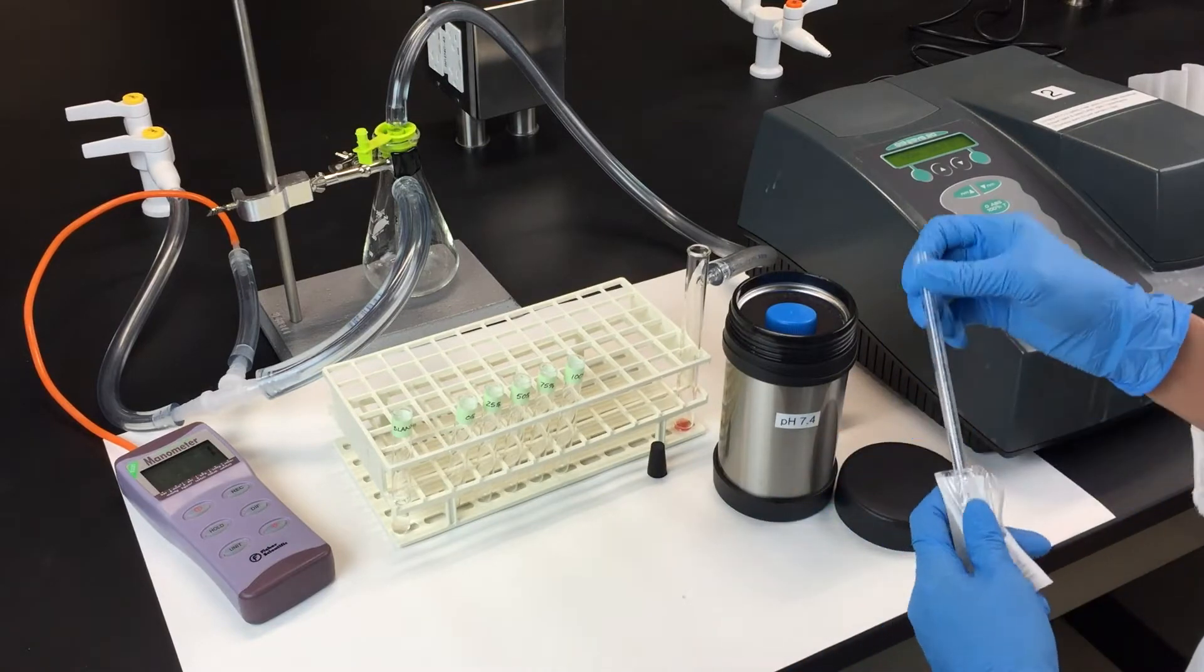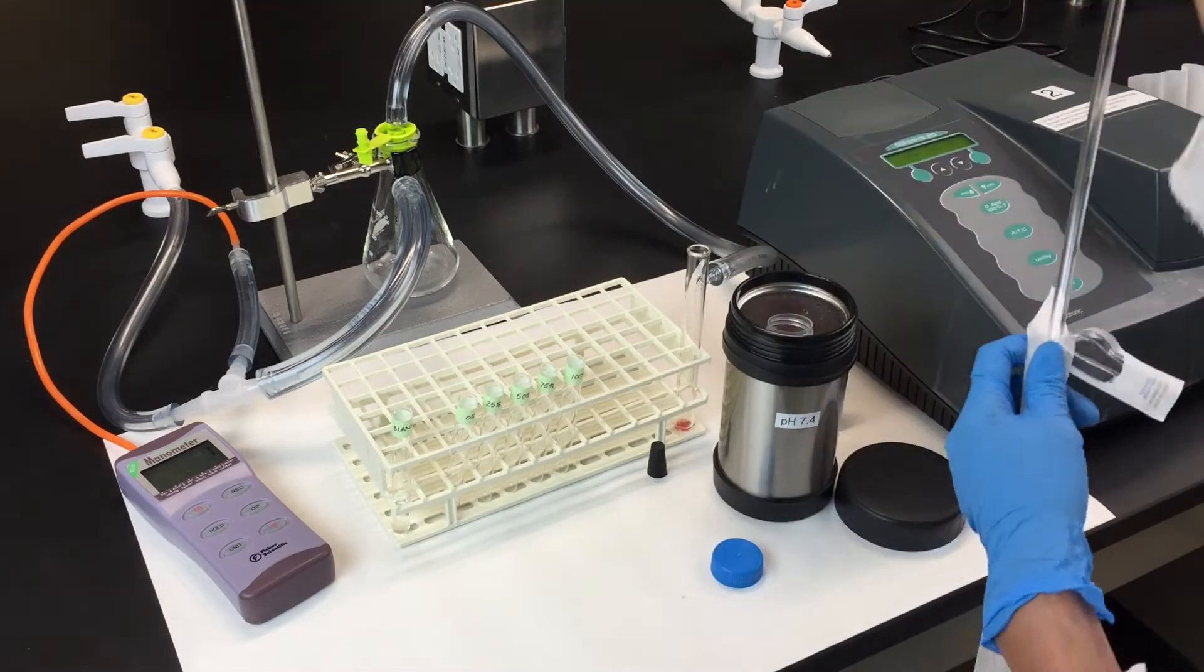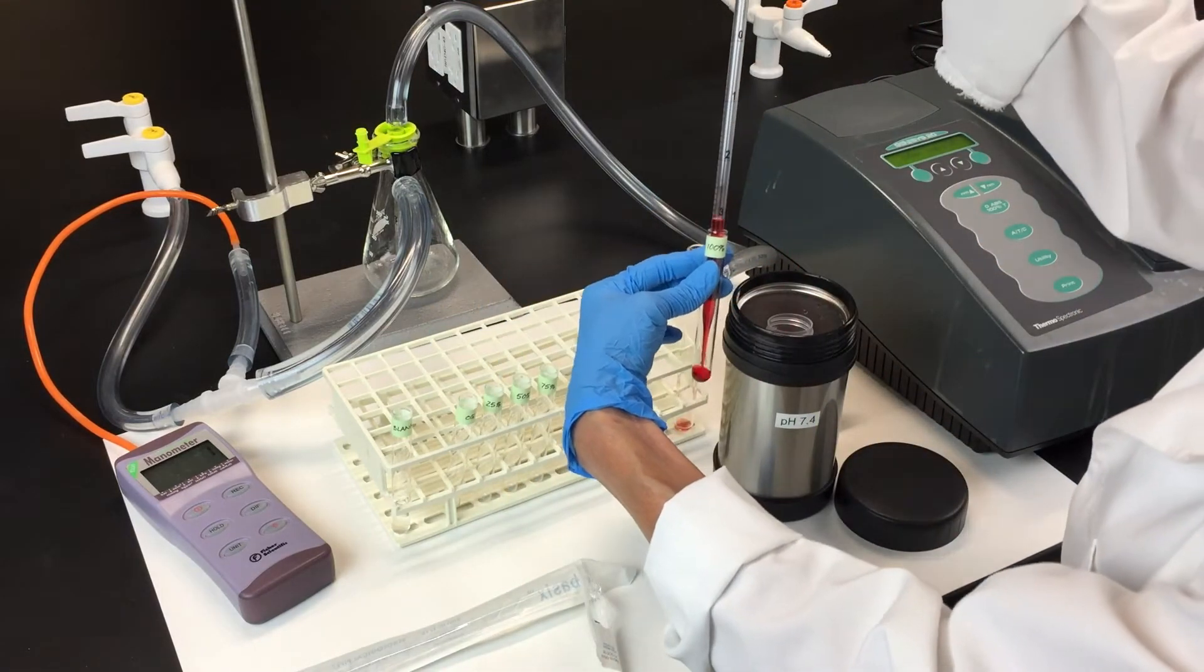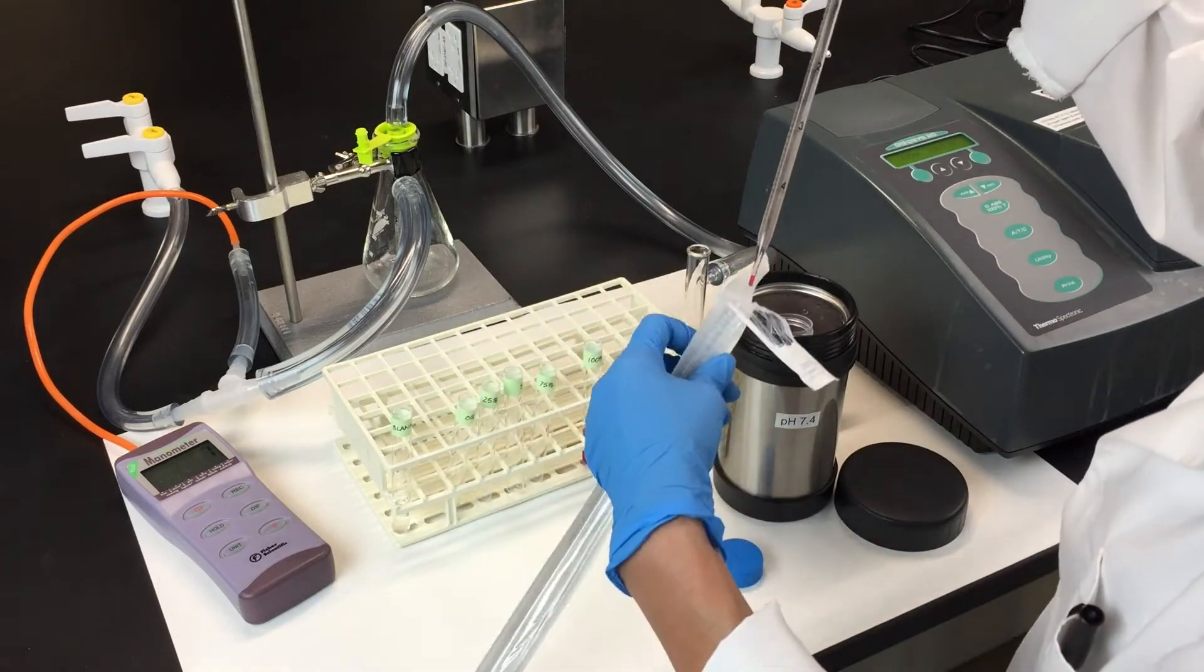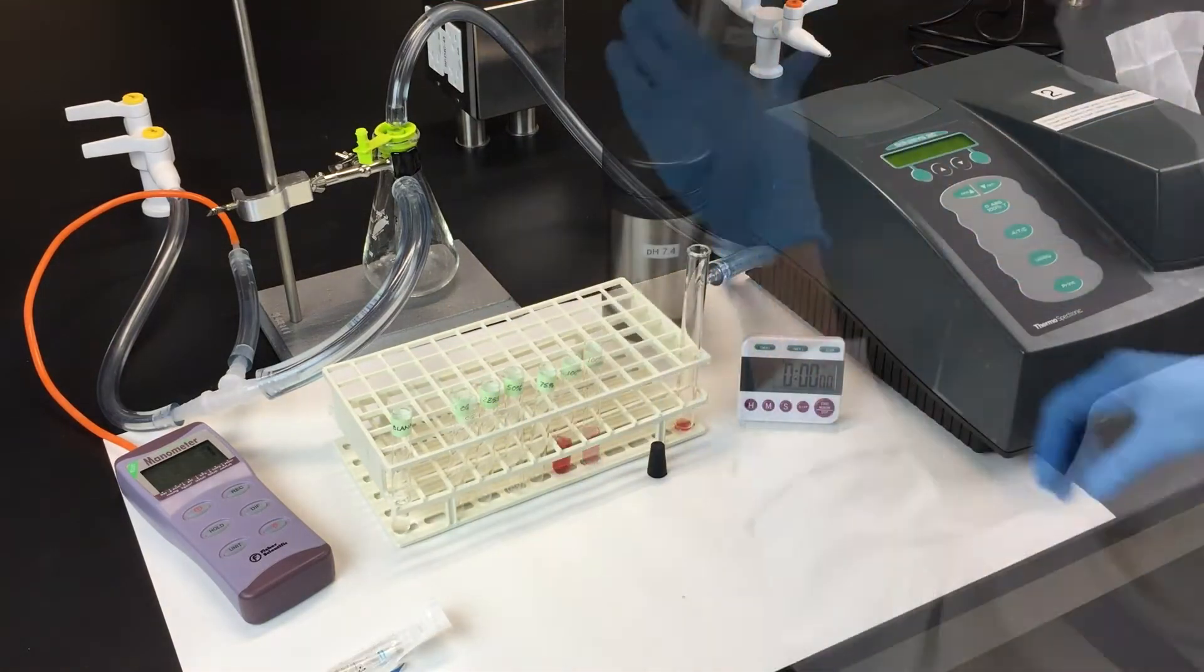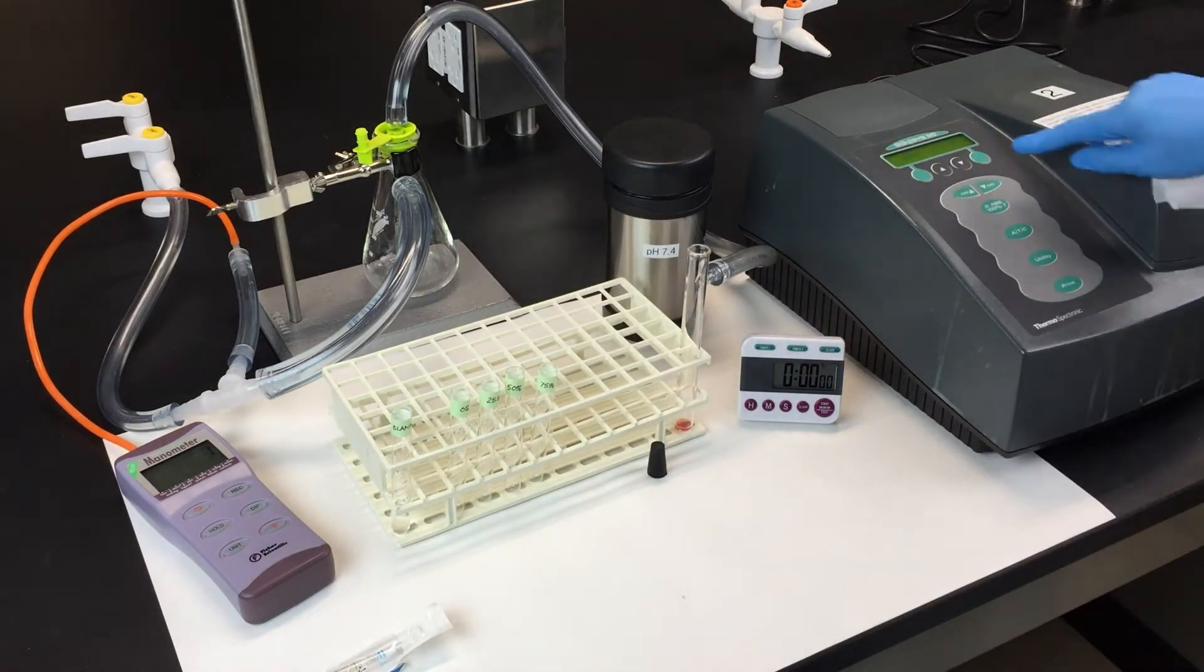Begin by transferring 2 milliliters of your hemolysate to the 100% tube and let it warm up. Once it's warmed up, wipe off the tube, place it in the spectrophotometer, and take your reading.